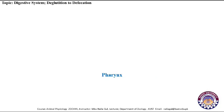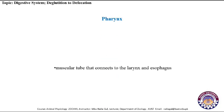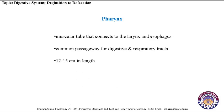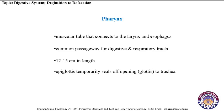The pharynx is a muscular tube that connects to the larynx and esophagus. It is a common passageway for both the digestive and respiratory tracts and is almost 12 to 15 cm in length. Though it is shared by both tracts, food doesn't enter the respiratory tract because at the time of swallowing, the epiglottis temporarily seals off the trachea, and food follows its own path into the esophagus.